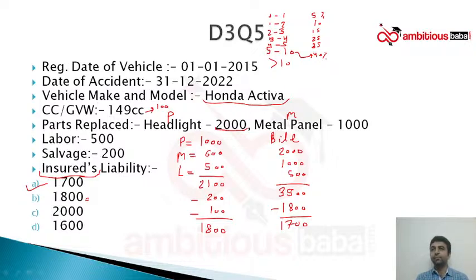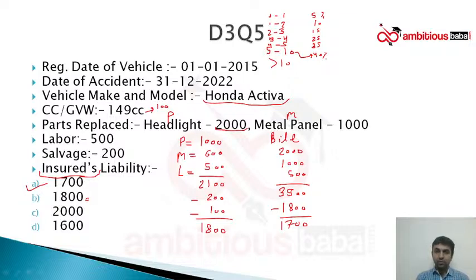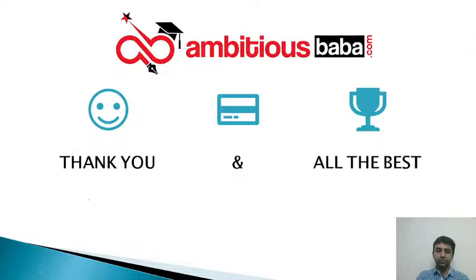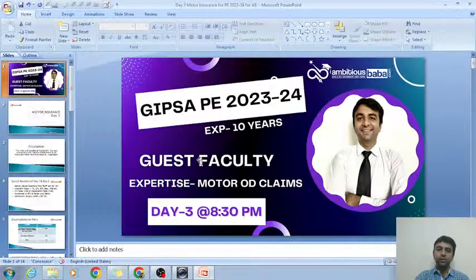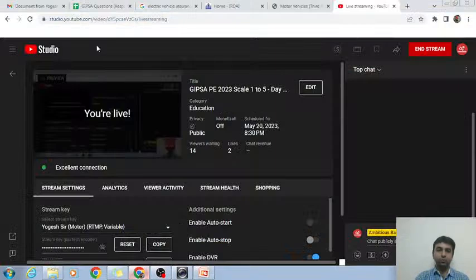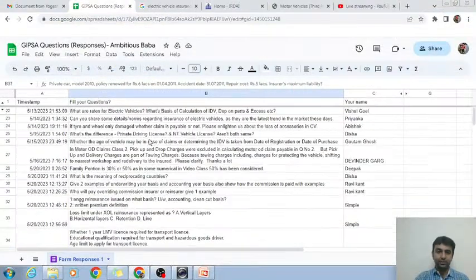The answer is confirmed as 1,700. So 45 minutes are over — today we are right on time. Now we will be solving the doubts of the people who have asked questions in the Excel file. You will be getting this PPT with the answers so that the question that went wrong you will have a relook at. Let's go to the query section — today we have got a lot of queries. Let's start solving them one by one.